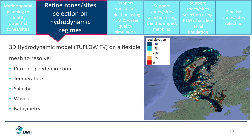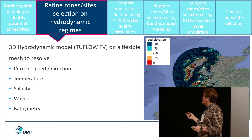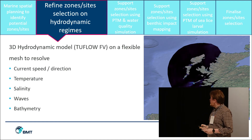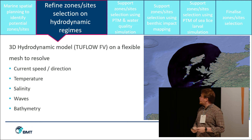Once we have that, we can use a 3D hydrodynamic model — 2FlowSE — on a flexible mesh to resolve the current speed, direction, temperature, salinity, the waves, and the bathymetry of the area. As you can see here, this is our flexible mesh of the Scottish West Coast demonstrating the bathymetry, and there is also an image of modelled current velocities at a specific time step.